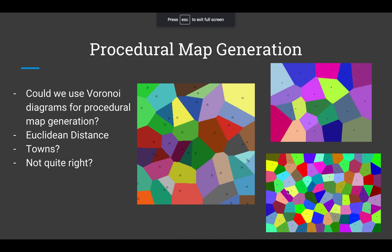So is this valid? Could we use Voronoi diagrams for procedural map generation? Do these look like street maps to you? They might, and maybe they don't. The standard way of creating Voronoi diagrams is with Euclidean distance. All the examples I've shown you so far use Euclidean distance—just an ordinary line. These forms look a little bit like a town map, but we can do better.